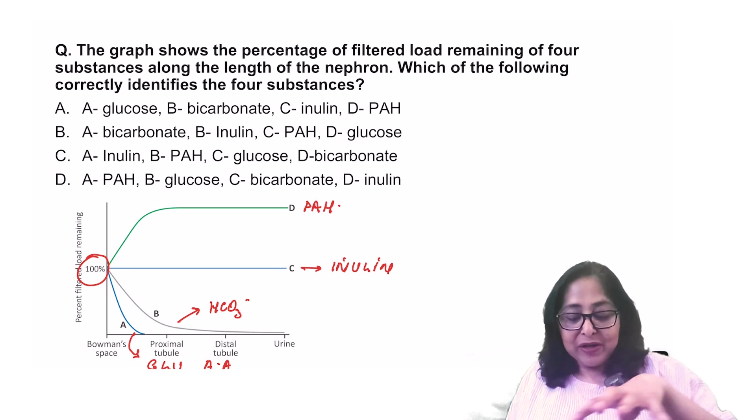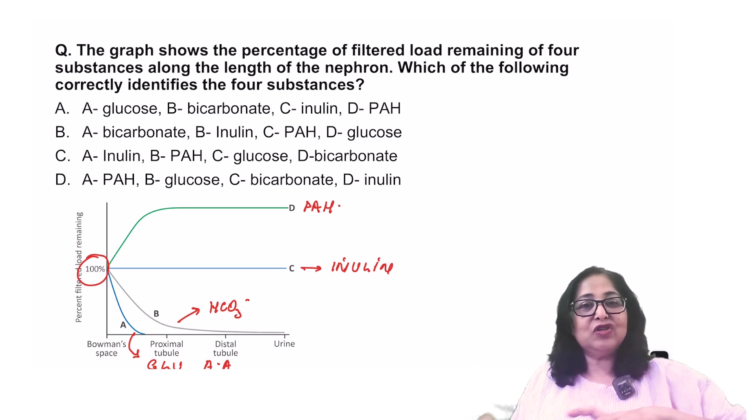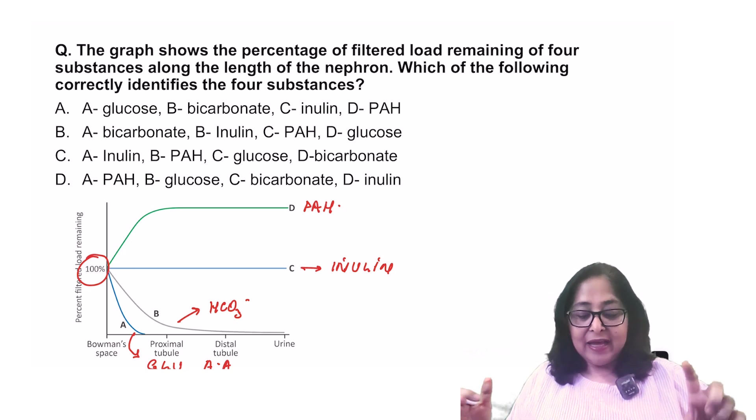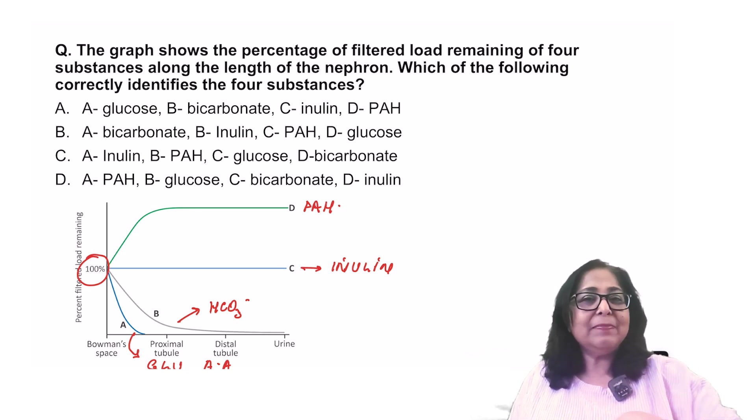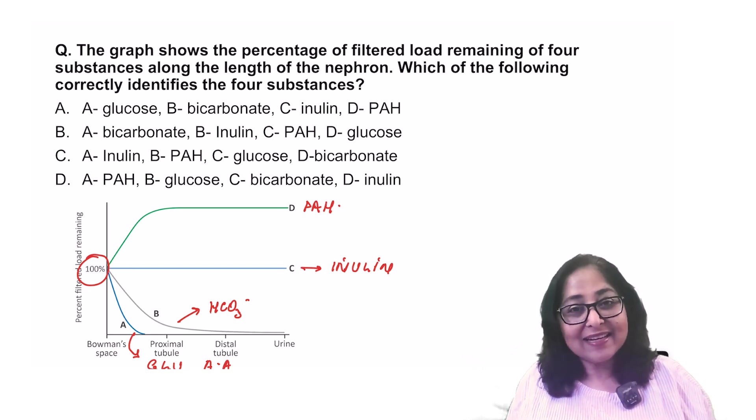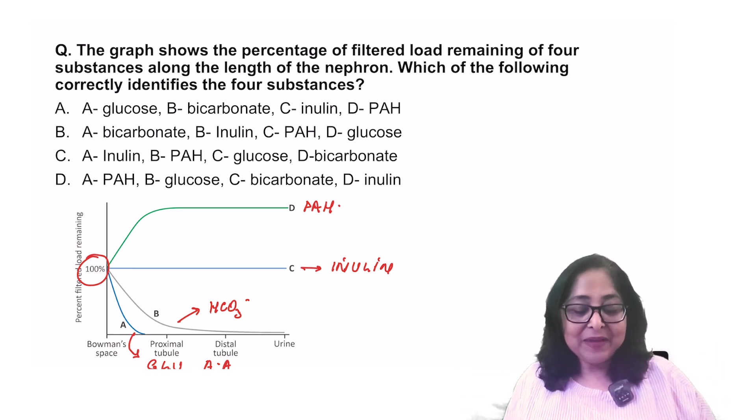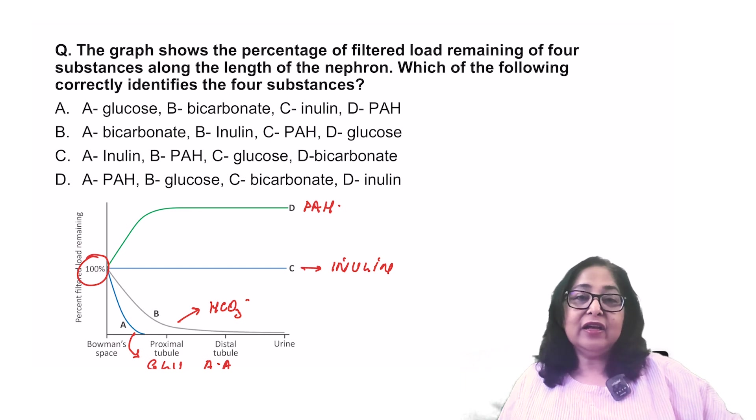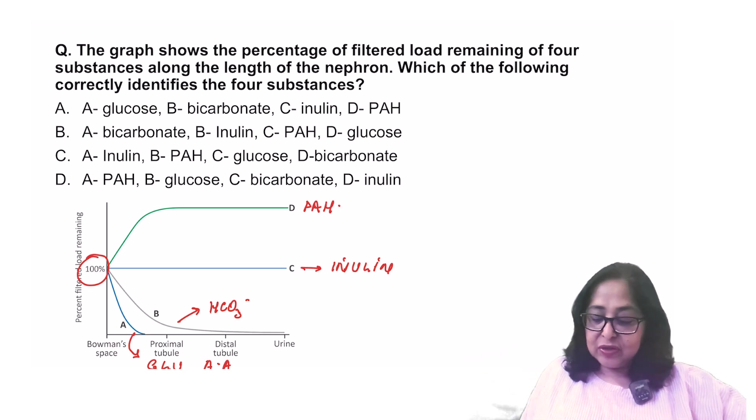Please, please remember when you're looking at these graphs, see what is on the x-axis, see what is on the y-axis. X-axis is showing you the length of the nephron and on the y-axis, the percentage of the filtered load remaining. We did a somewhat similar graph a couple of days back where we had clearance on the y-axis and there was the plasma concentration on the x-axis. So be very, very careful when you look at these graphs, what are they trying to convey? This is trying to show you that there are these four freely filtered substances, but what are the changes occurring to the percentage of the filtered load remaining along the length of the nephron?